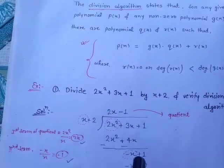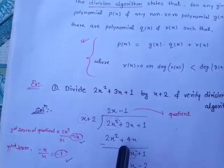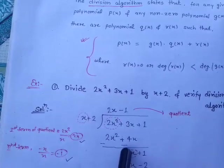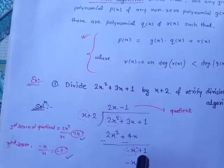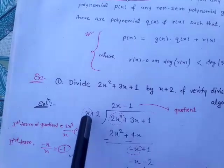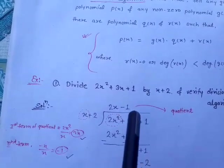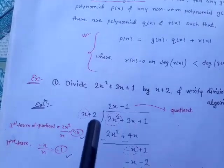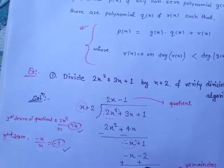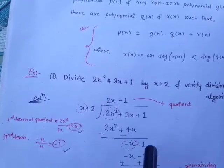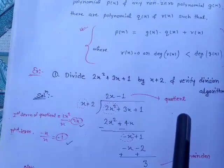Be careful: we always change the sign of the term being subtracted. So −4x and +3x gives −x, and bring down +1. Now the first term is −x and divisor's first term is x, so −x ÷ x = −1. Multiply −1 by (x + 2) to get −x − 2. Changing signs: +1 + 2 = +3. So the remainder is 3 and the quotient is 2x − 1.